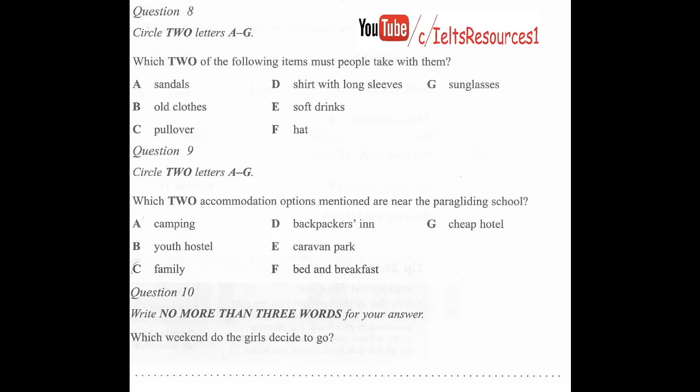We need to bring suntan lotion and something to protect your head from the sun. OK, that sounds reasonable. And where would we stay? Well, look, they seem to operate a campsite, too, because it says here that it's only $10 a day to pitch a tent. That'd be fine, wouldn't it? And that way would save quite a bit because even a cheap hotel would cost money. Or perhaps we could stay in a bed and breakfast nearby. It gives a couple of names here we could ring. I think I might prefer that.